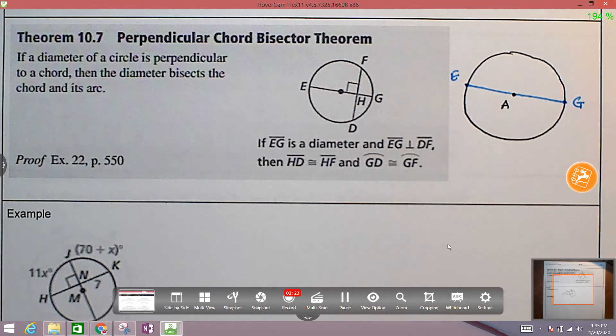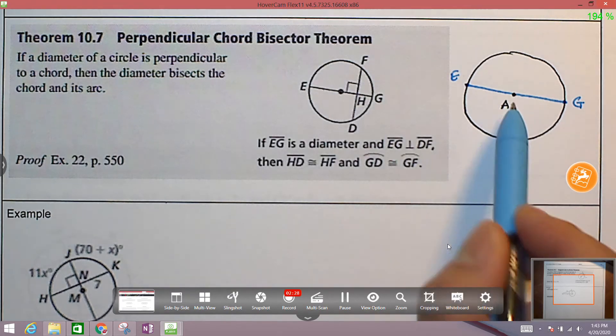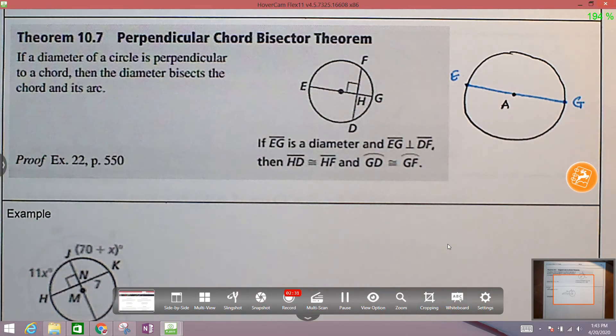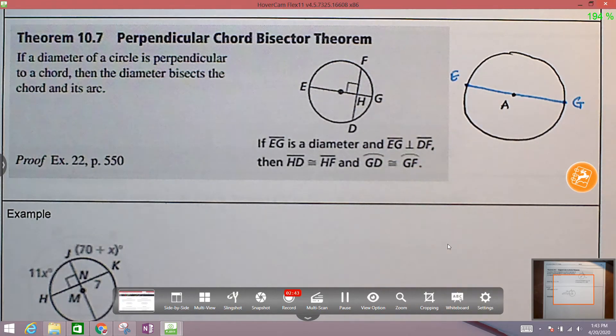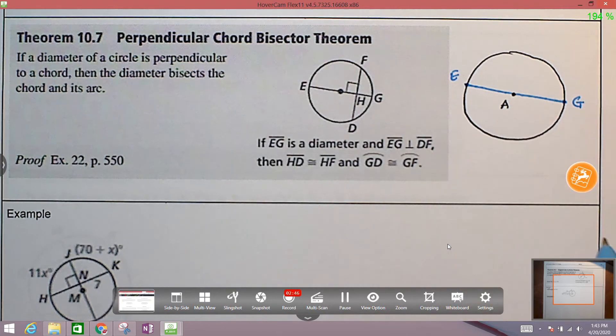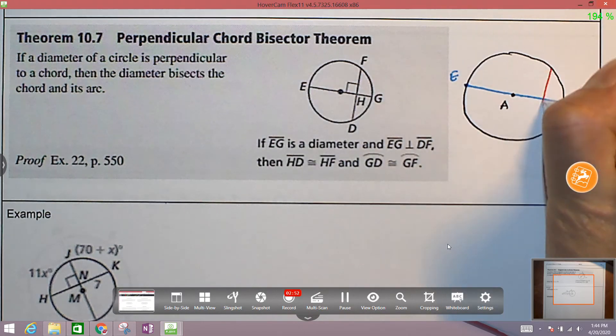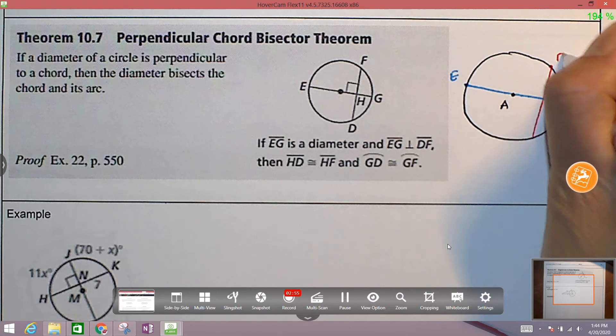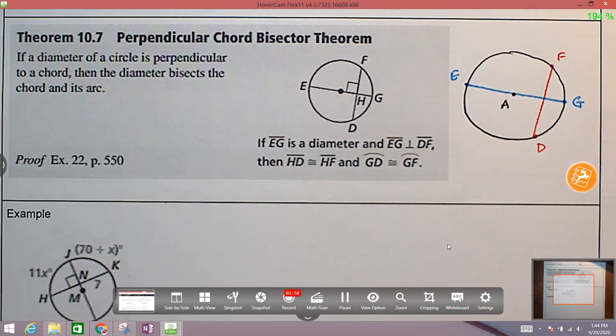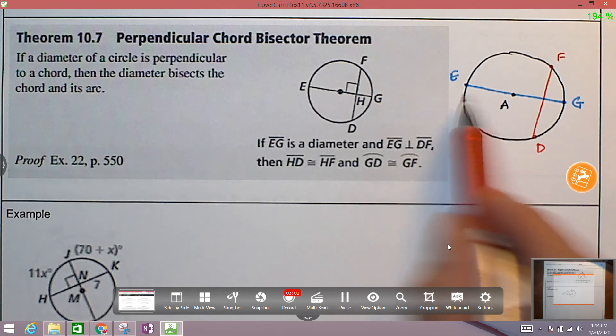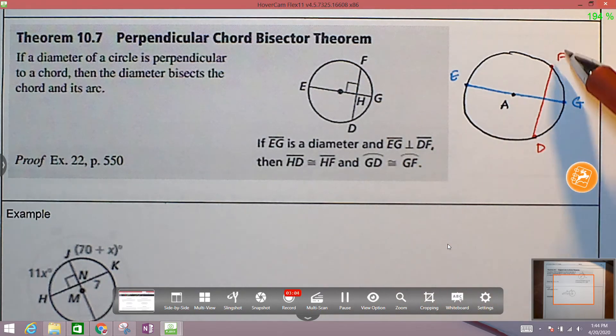Now, segment EG is a special chord, right? And it's special because it also intersects point A, the center of the circle. So a chord that intersects the center is the diameter. So we know that segment EG is a diameter. So we're given that by this diagram. Now we have this other chord that's in a different part of the circle right here. Let's label it segment FD. And you notice that the blue segment, the diameter segment EG, it intersects segment FD.